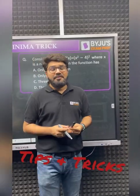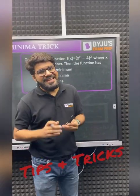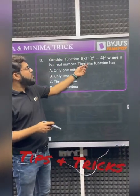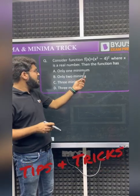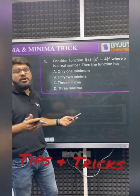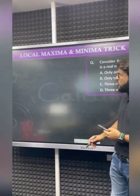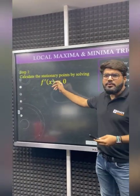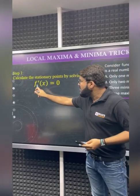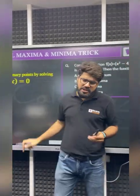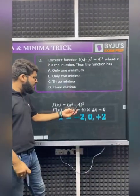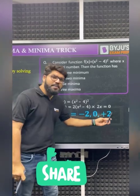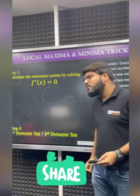Local maxima and minima — a frequently asked question in GATE or competitive examinations. Given a function f(x), we need to comment on how many maxima or minima it has. Step one is to find the stationary points by setting f'(x) equal to zero. The stationary points come out to be minus two, zero, and plus two.